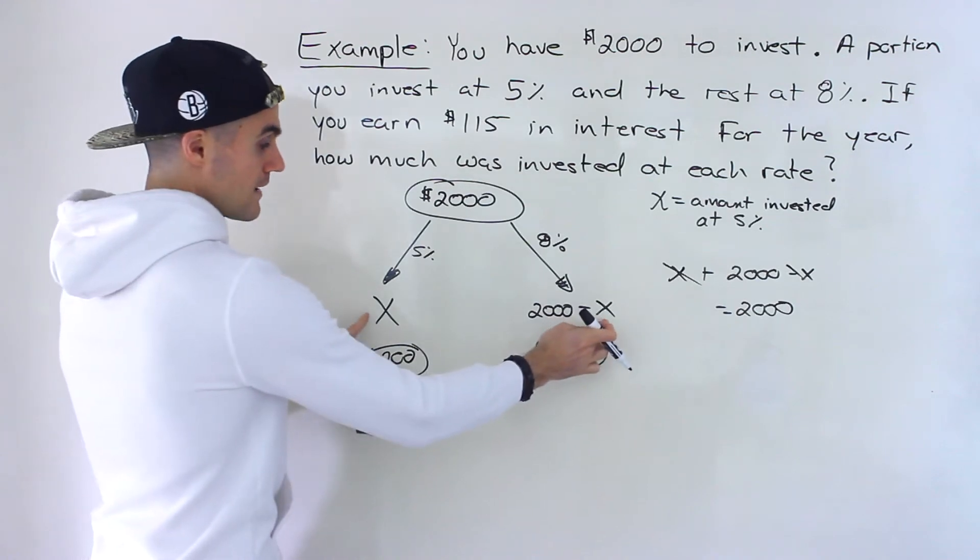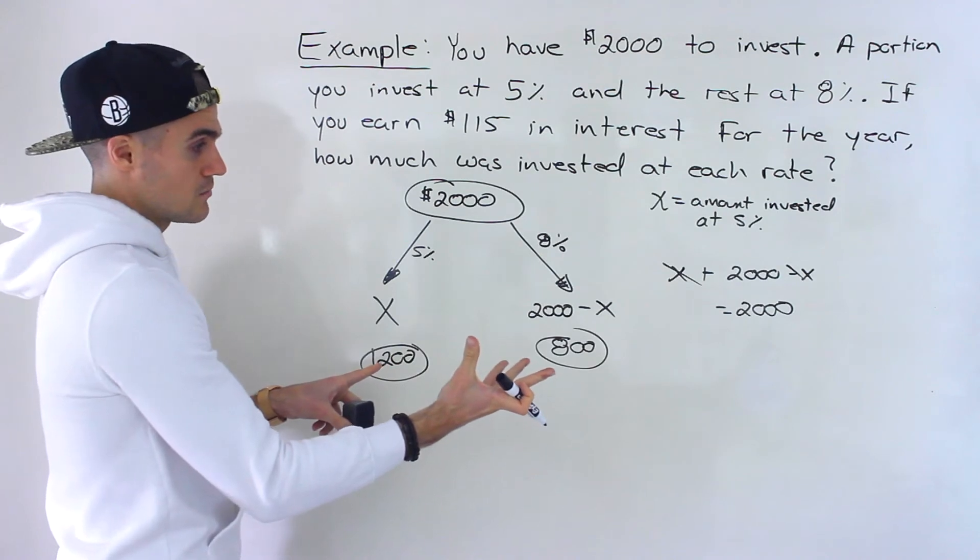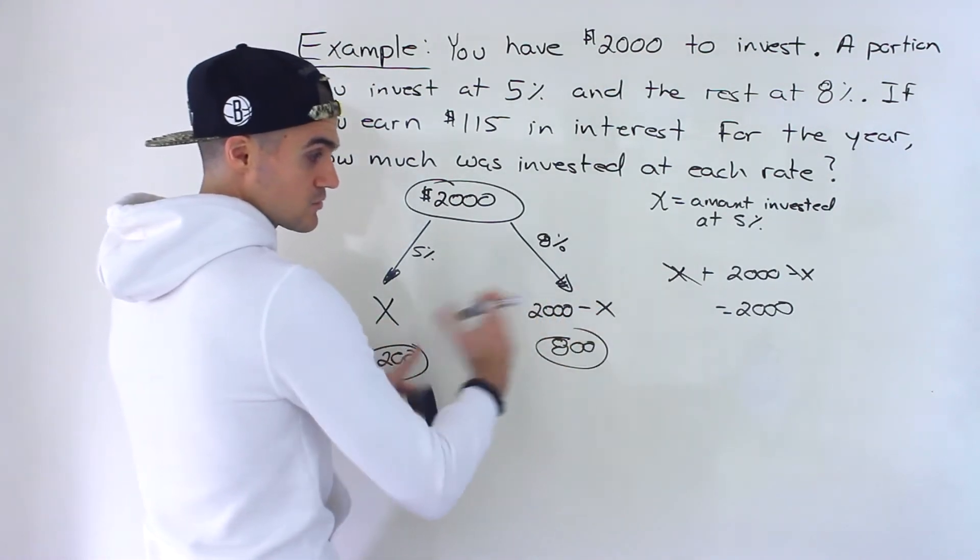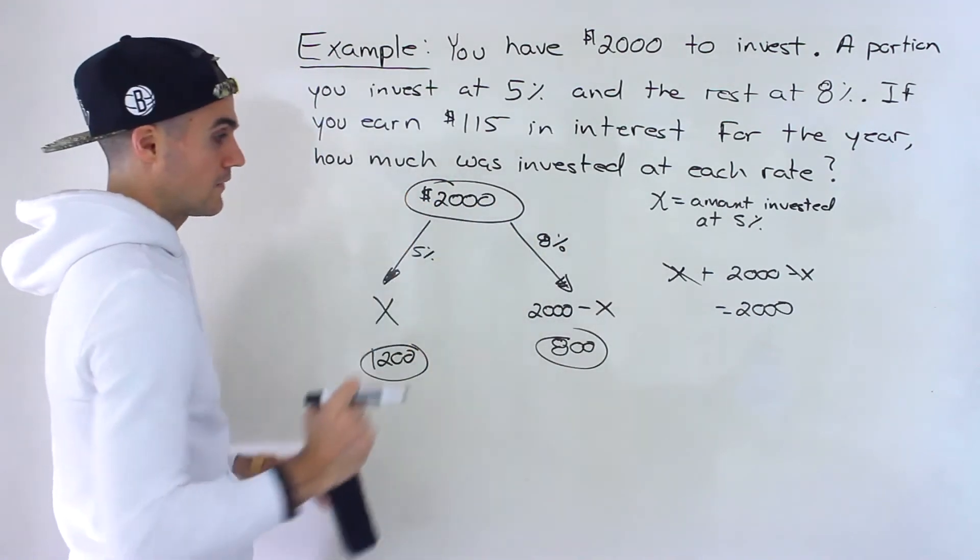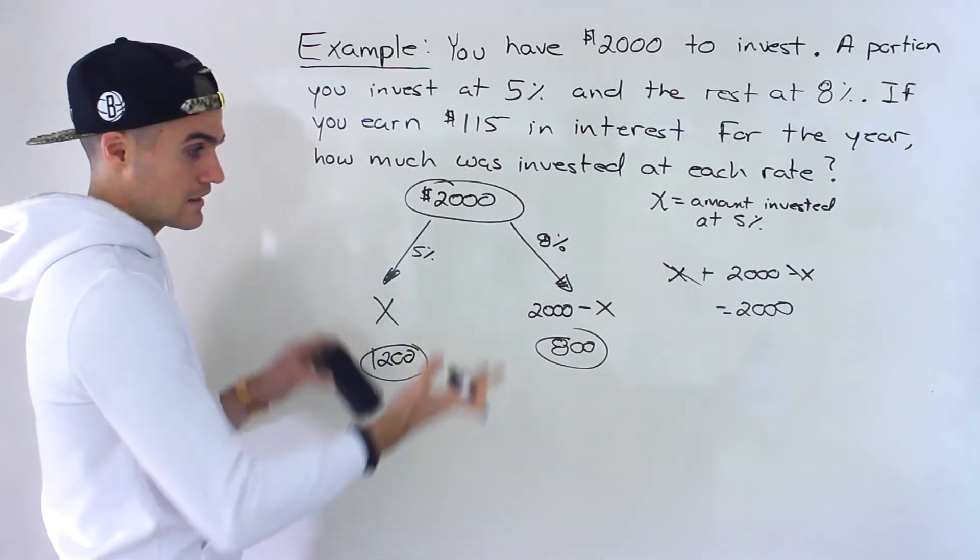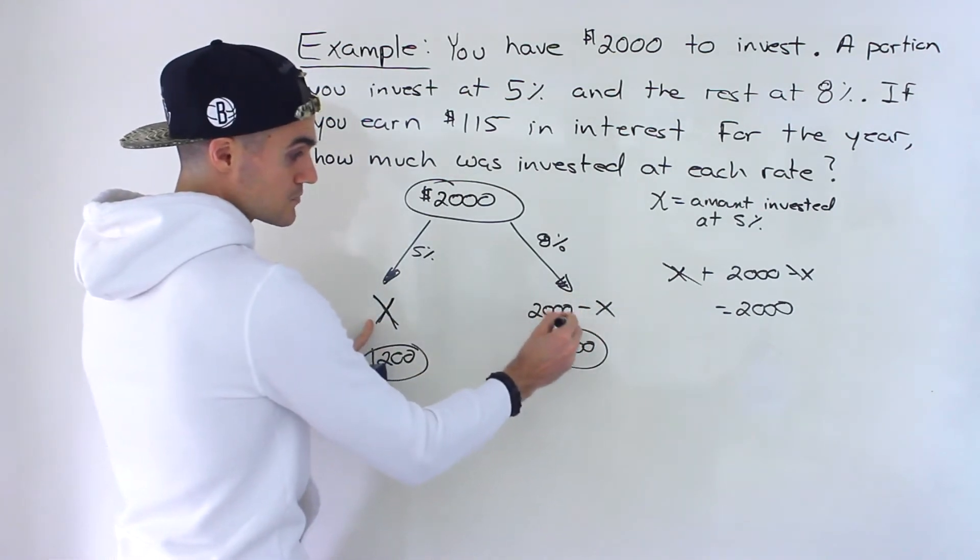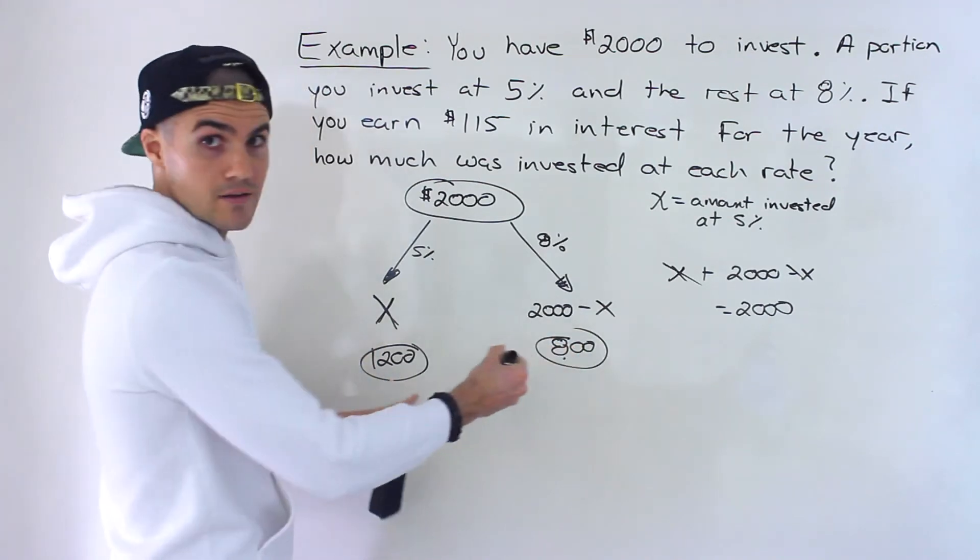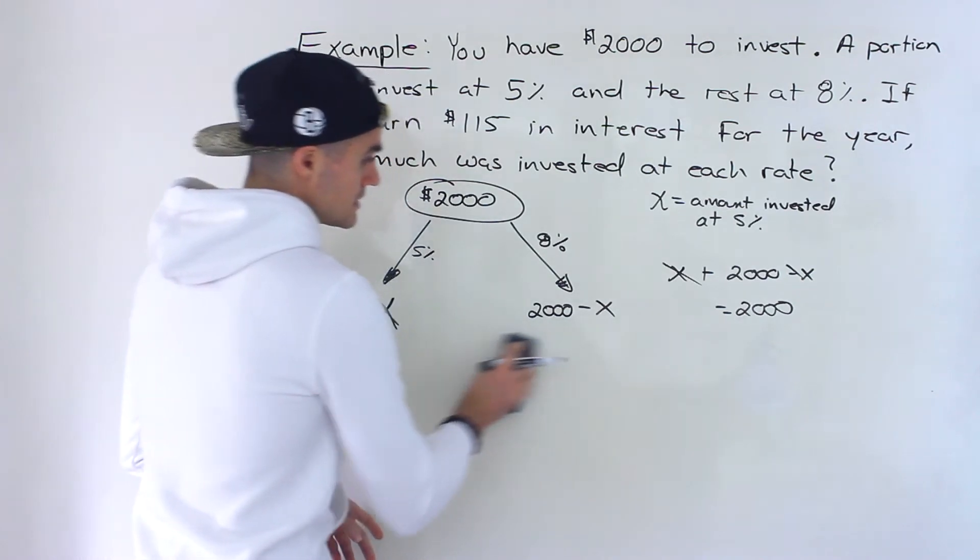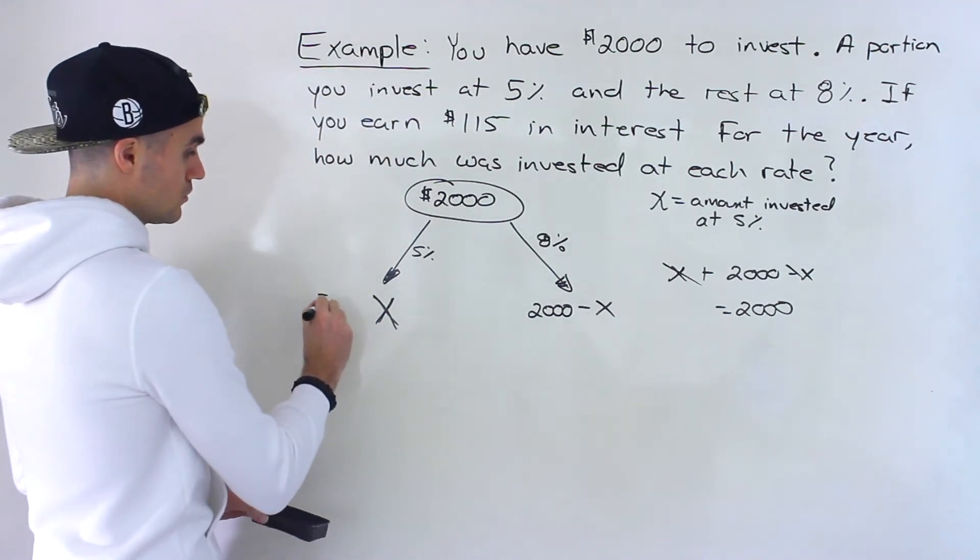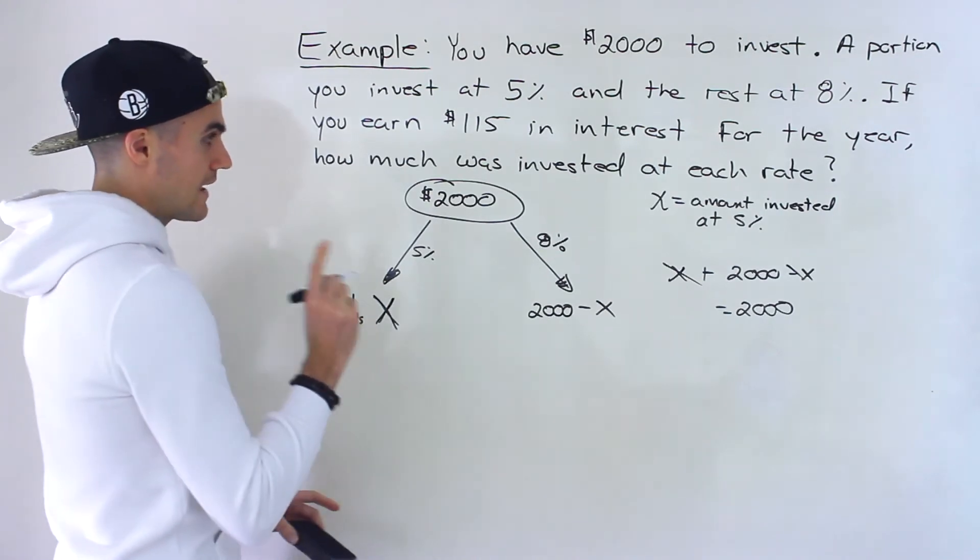So no matter what X value you plug in here, the total of these is going to be $2,000. Well, X has to be between 0 and $2,000. It can't be greater than $2,000 because that's the total amount that we have to invest. But anything in between that, no matter what you plug in here, as long as you subtract that amount from $2,000, both of these amounts are always going to add up to that total amount invested. So that's the total amounts. So these are the total amounts over here.